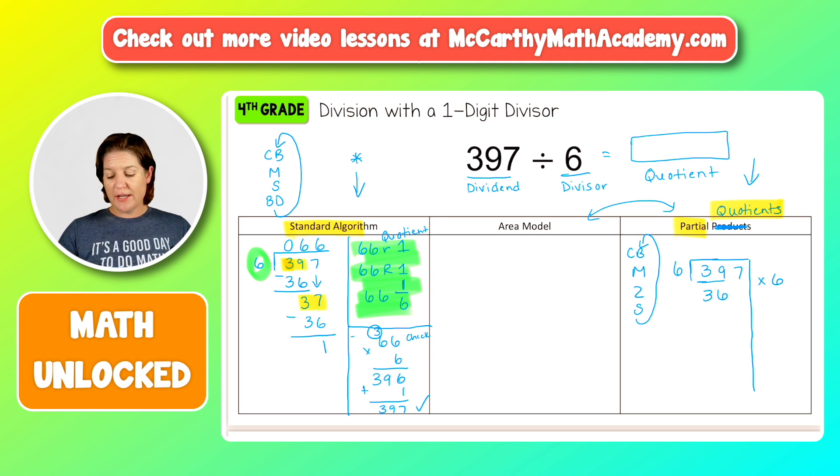This is where we go ahead and we include some zeros though, because we can say, all right, six times six is 36, but I want it to be 360 right there. So to do that, I'm going to make it times 60 over here. I include my zeros.